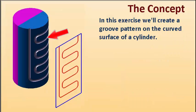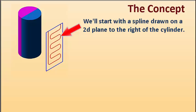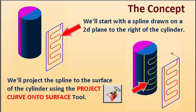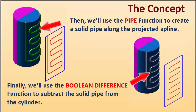In this exercise, we'll create a groove pattern on the curved surface of a cylinder. The cylinder is split into two half cylinders, so we'll project to the near half cylinder side. We'll start with a spline drawn on the 2D plane to the right of the cylinder. We'll project the spline to the surface using the project curve onto surface tool, then use the pipe function to create a solid pipe along the projected spline. Finally, we'll use the boolean difference function to subtract the solid pipe from the cylinder.